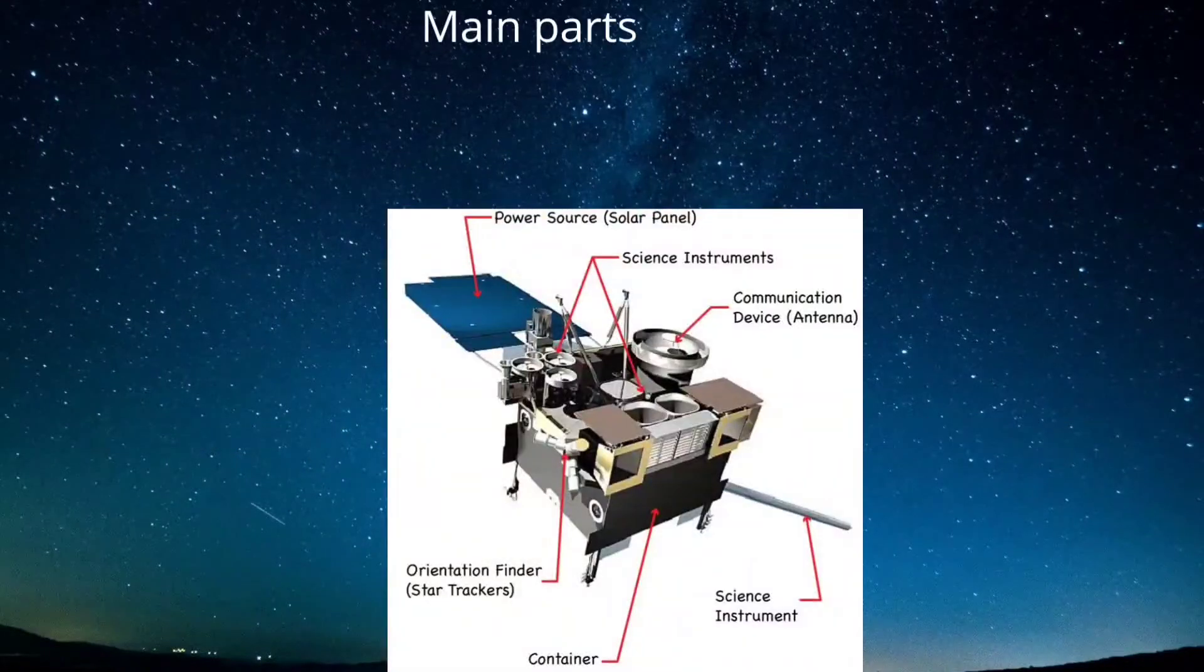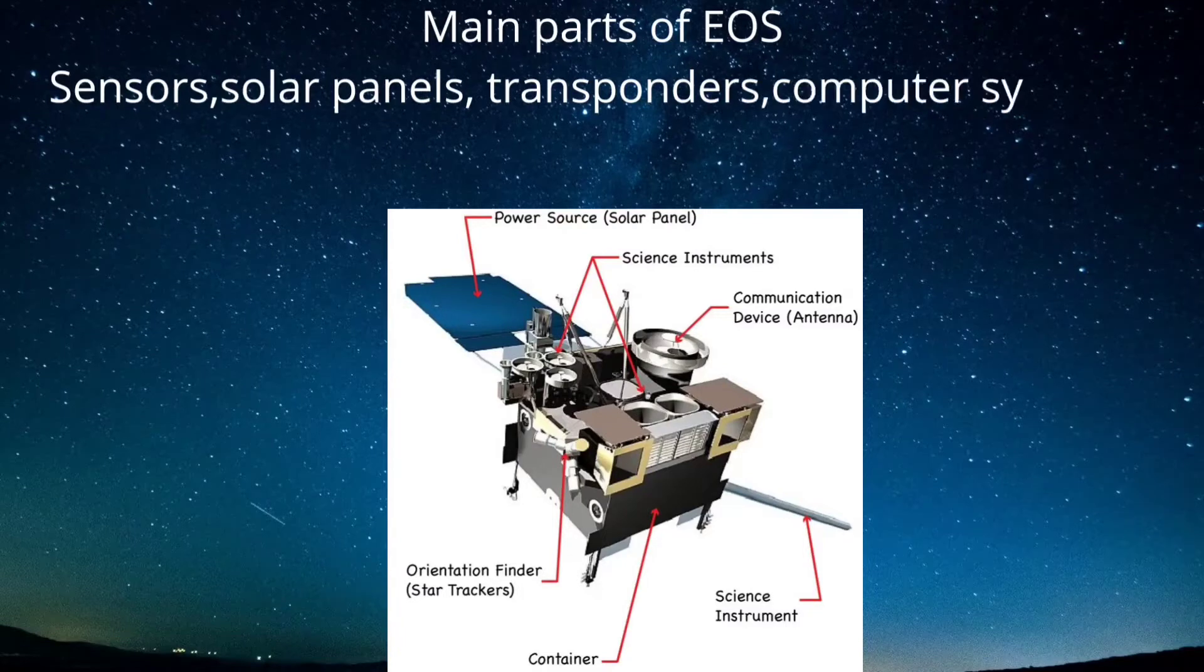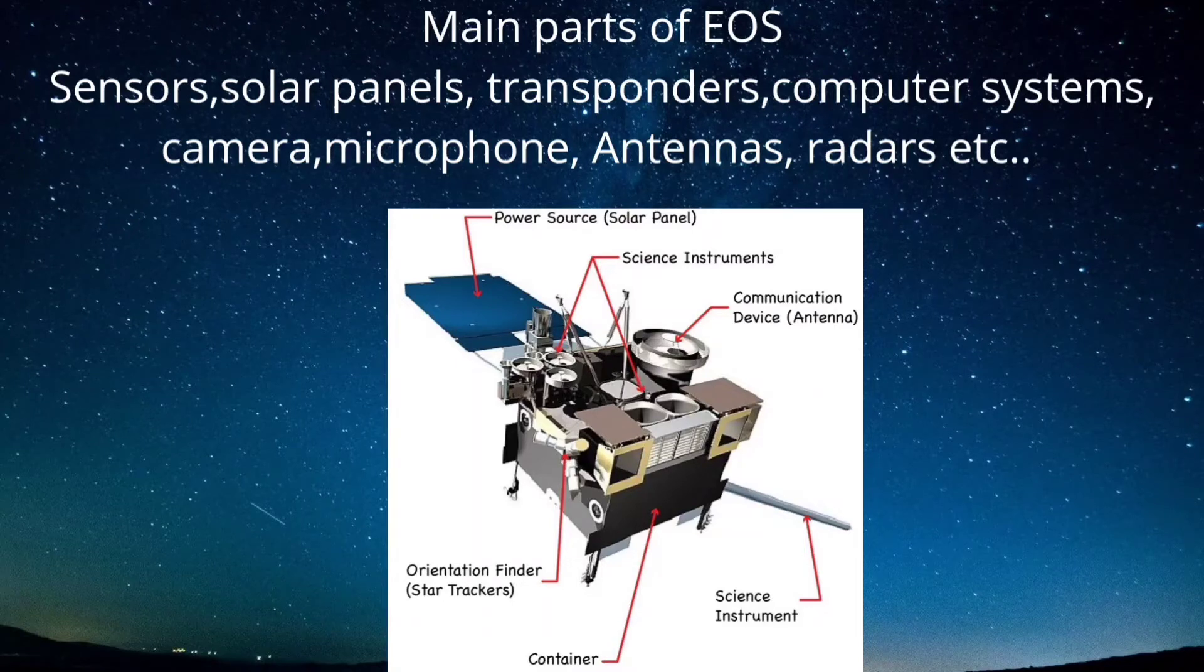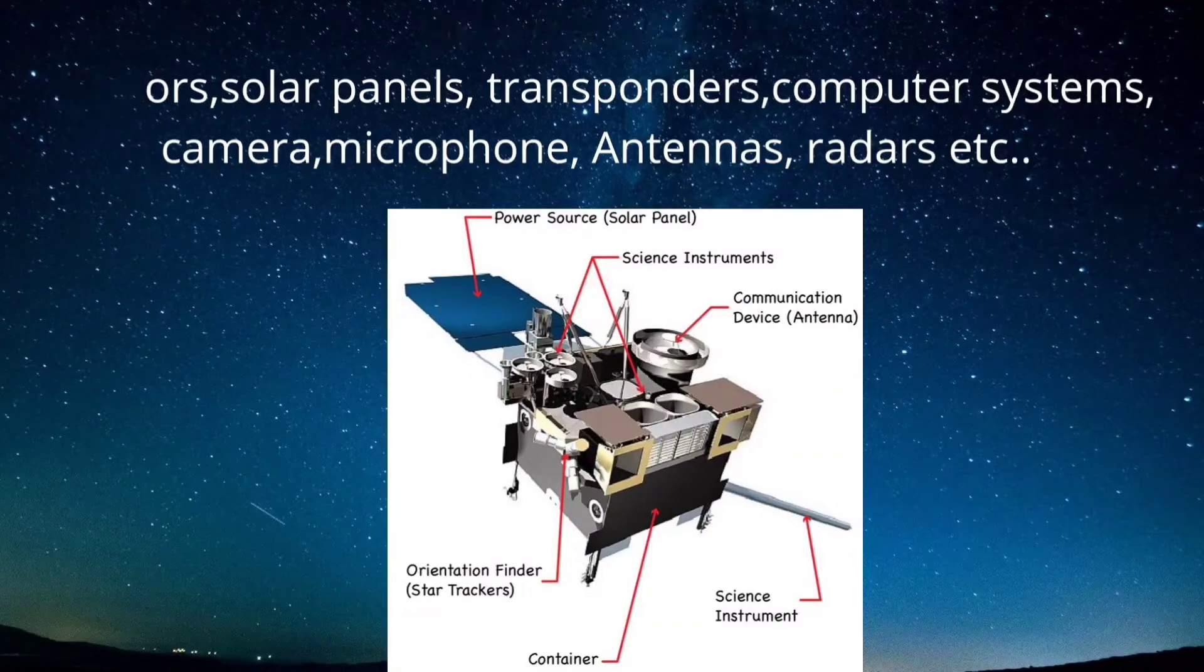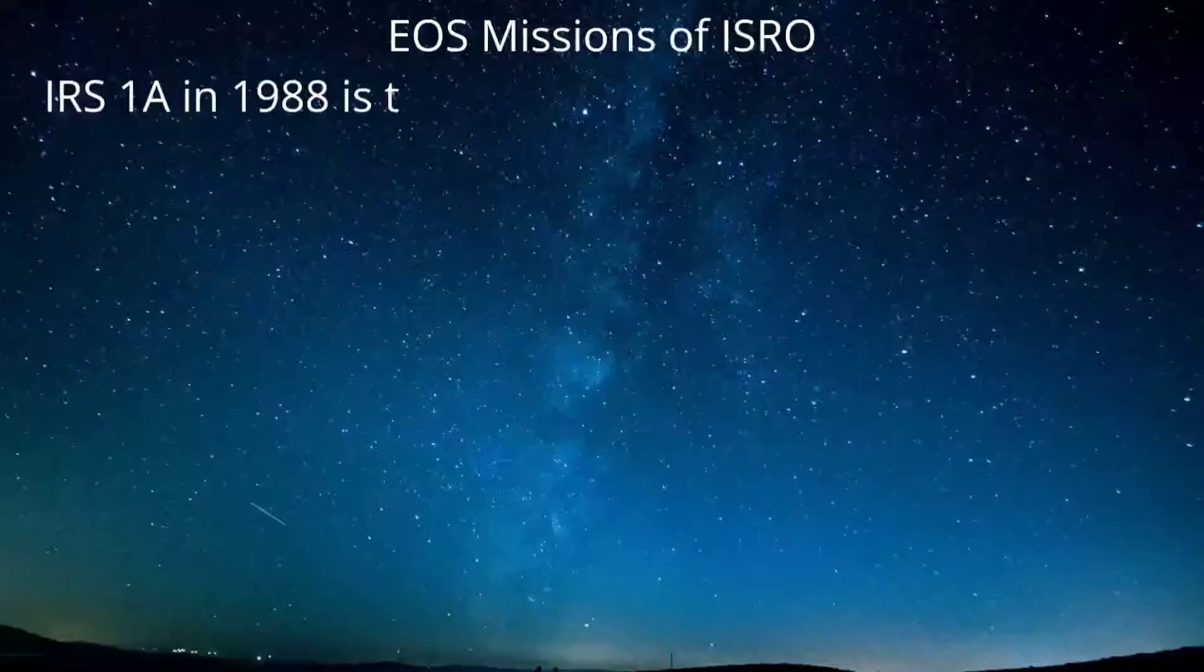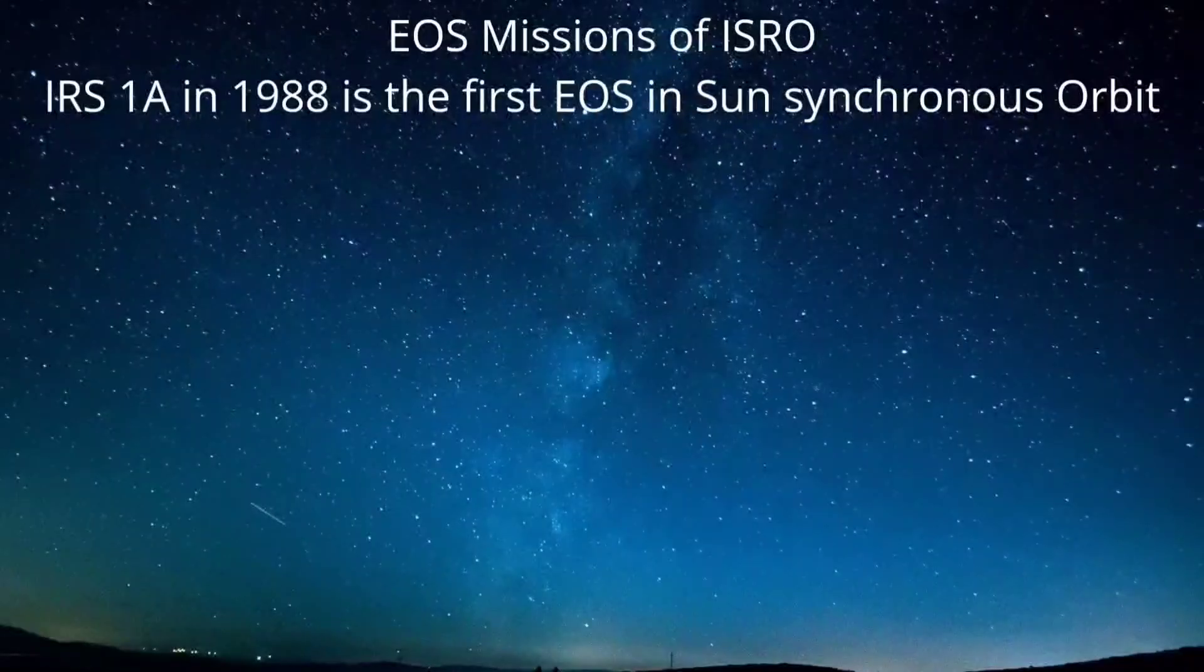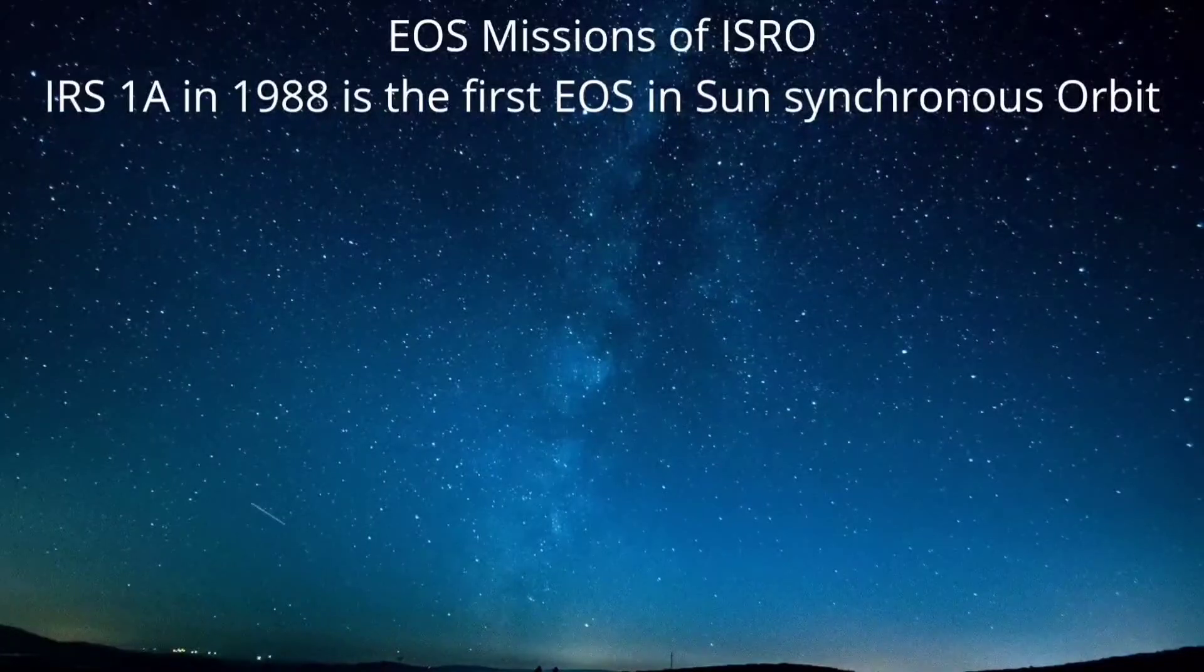Sensors, solar panels, transponders, computer systems, camera, microphone, antennas, radars, etc. are the main parts of an Earth Observation Satellite. IRS-1A in 1988 is the first Earth Observation Satellite in Sun-Synchronous Orbit.